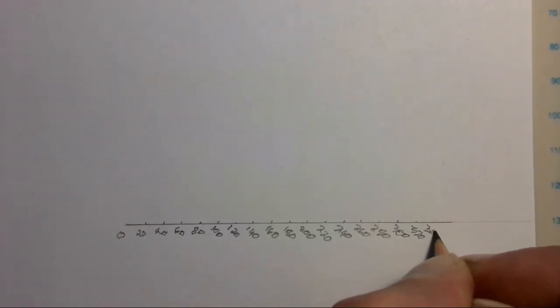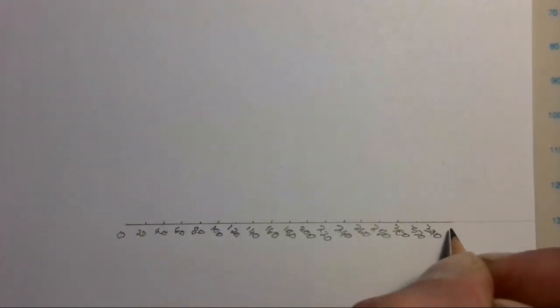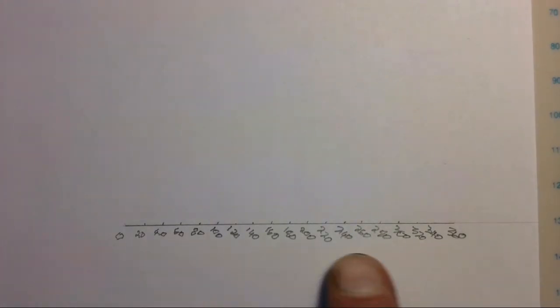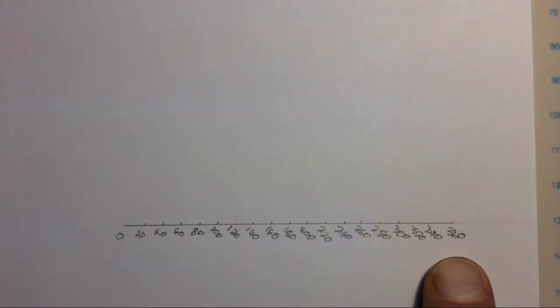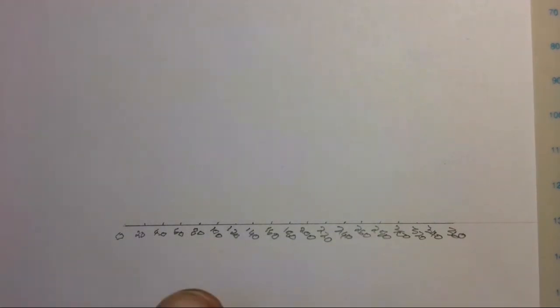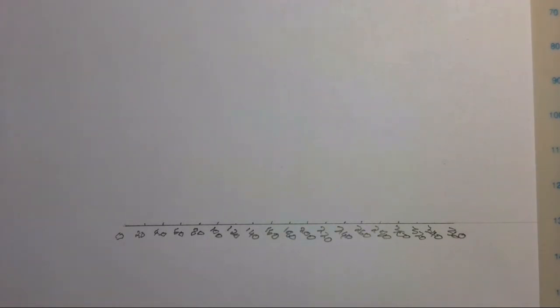We should end at 360 if we were correct — and we do. So we've got our displacement diagram's baseline broken into 18 parts, with 5-millimeter parts labeled in 20-degree intervals. That's the start of our displacement diagram done.